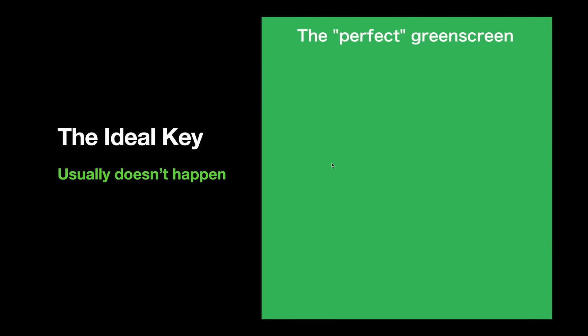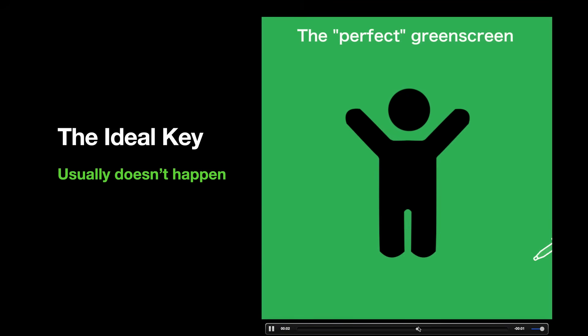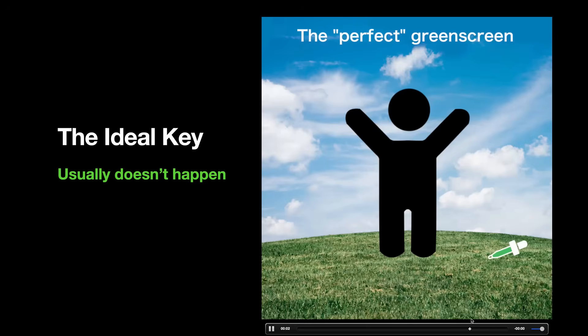When you're starting out and learning keying, some of the information out there is just about using one node, getting a key — and that's usually not how it works. Usually it's combining multiple keyers and it's more of an advanced process. So if we look at this video and hit play, we have a guy in a green screen. We take our color picker, select the color, and we have a perfect character cutout put over the background. Your job's done, you get home, you get paid — which is generally never how it works.